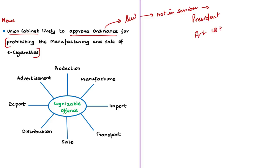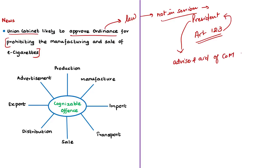Under Article 123 of the constitution, the President of India has the power to promulgate or enact ordinances when both houses of parliament are not in session. The president can exercise his legislative powers of promulgating an ordinance in accordance with the aid and advice of the council of ministers. Today's article states that the union cabinet is going to approve the ordinance for prohibiting the manufacturing and sale of e-cigarettes. After this, the president will promulgate the ordinance if satisfied that circumstances make it necessary to take immediate action.